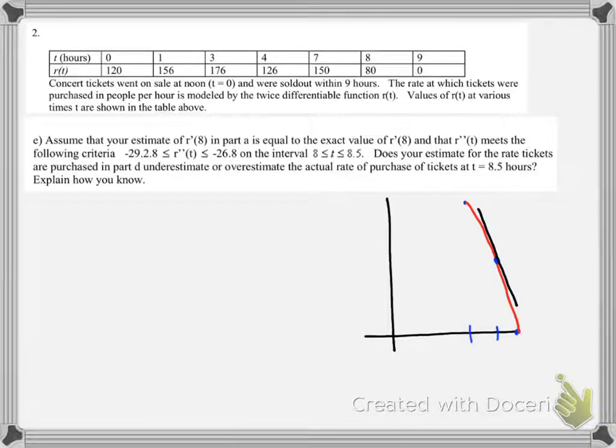In this Part E, you're told that our prime value that we found in Part A, that was negative 75 tickets per hour per hour, we're told that's the exact value.